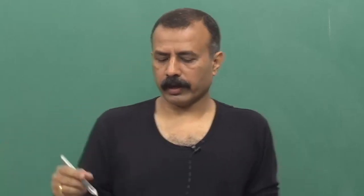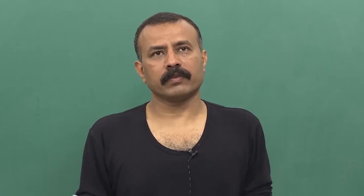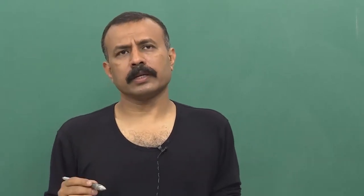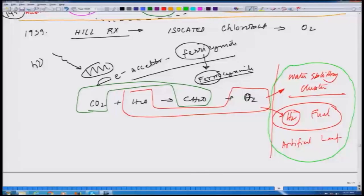If you get back to the slide, this is the area where a tremendous amount of work is happening across the world in terms of developing what we call an artificial leaf, and some landmark discoveries were done in India as well as abroad. Those of you who are keen can go through the website of Daniel Nocera at MIT — he has done some very seminal work in that area. The other part of this reaction falls under another emerging area of carbon sequestration.